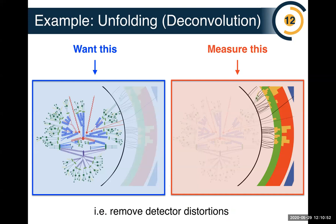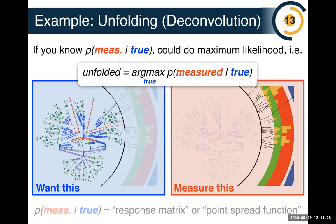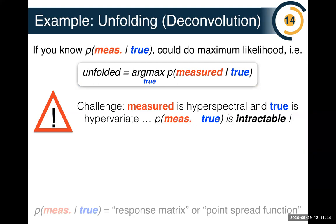Unfolding is a particular challenge where we want to learn something about the full distribution of the feature space pre-detector — in some fields this is called deconvolution. We want to learn about the particles before they hit our detector, but all we get to measure is the post-detector output. If we knew P(measured|true), we could declare the unfolded as the maximum likelihood estimator, analogous to a point spread function. But since measured is hyperspectral and true is high-dimensional, P(measured|true) is intractable.